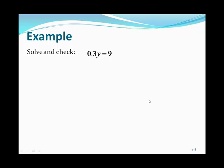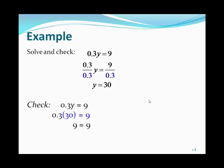Here's another multiplication equation: 0.3y equals 9. To solve, divide by 0.3. On the left-hand side that gives just y, and 9 divided by 0.3 is 30. Checking the solution by substituting y equals 30 back into the original equation gives a true statement, so y equals 30 is our solution.